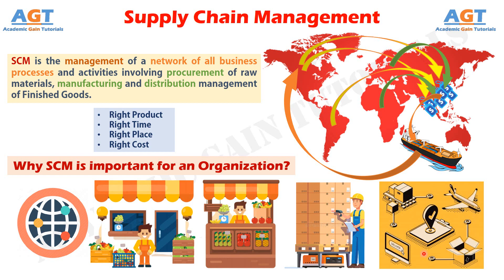Inventory means value and is an asset to the company. Every business has a standard for inventory turnaround that is optimum for the business. Inventory turnaround refers to the number of times the inventory is sold and replaced over a period of 12 months. The health of the inventory turn relates to the health of the business.